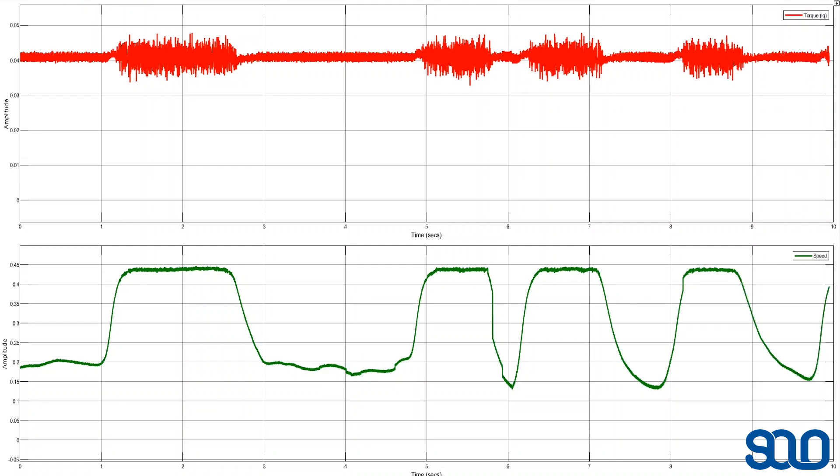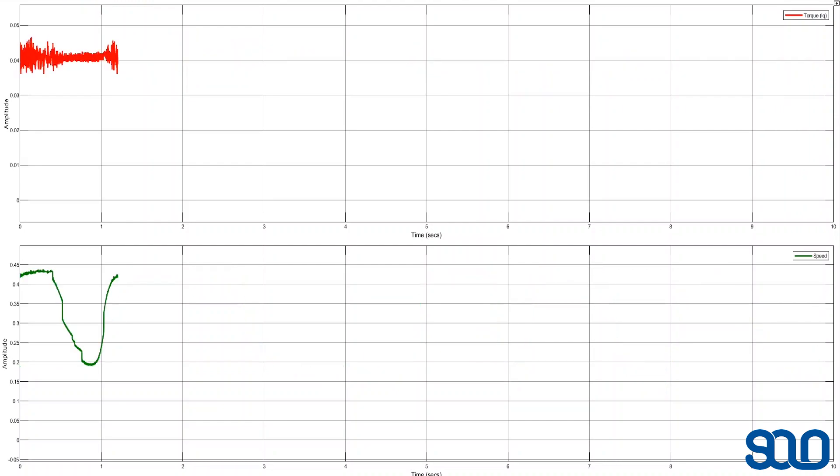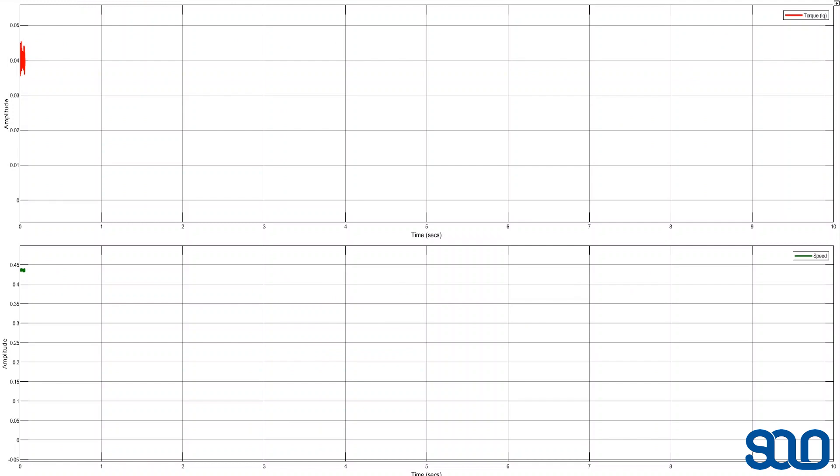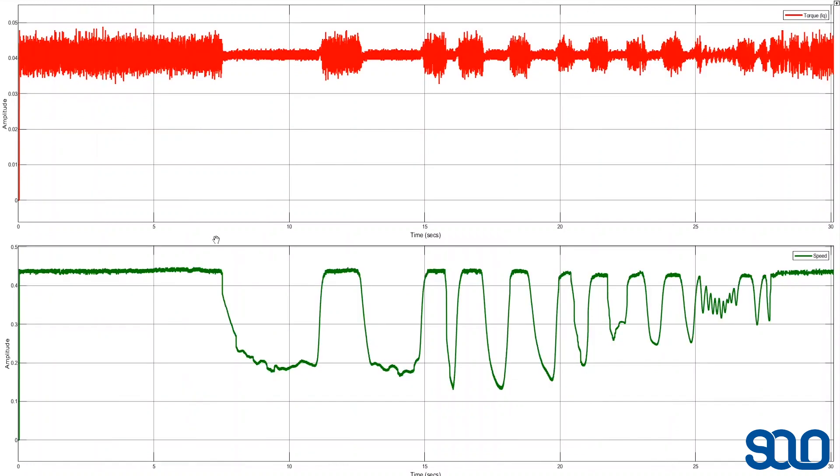So you see that now I'm applying some load on the shaft, the speed goes down because the load is much more than the previous load but the torque remains the same. Actually the reason this happens is because the torque when it's fixed can sustain a certain amount of load, and if you increase the load which I'm doing now with my hand, the thing which will change is the speed of the motor because we are expecting the torque controller to keep the torque steady all the time.